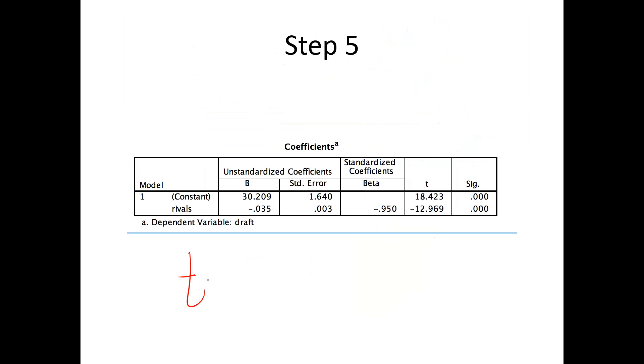In step five, we're going to calculate actual T. Remember, this is the constant. I don't want to use that, so I'm going to use this number here. Negative 12.97 is my actual T.